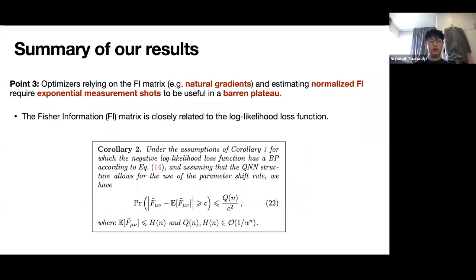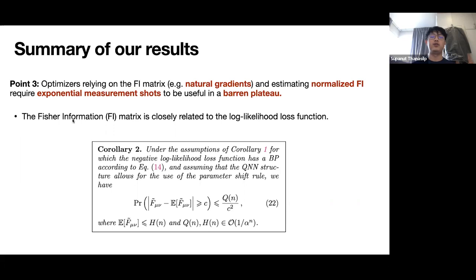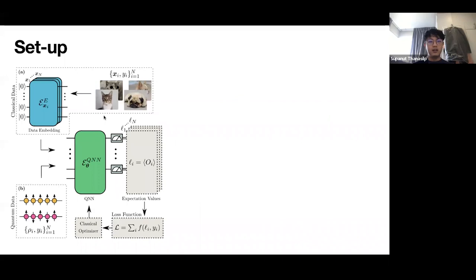The last point: we also look at different types of loss functions, including the log-likelihood loss function. It turns out the log-likelihood loss function is closely related to the classical Fisher information. We show that optimization relying on Fisher information — for example, natural gradients, or normalizing the Fisher information to aid training — does not help get rid of barren plateaus. You would still require an exponential number of measurement shots to navigate through the landscape.